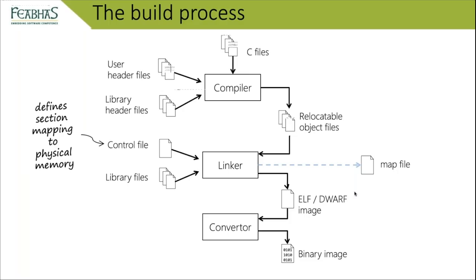The linker control file defines which sections map to which parts of memory — for example, putting .text into flash and .bss and .data into RAM. Critically, I always recommend generating a map file. The map file gives you the absolute address of every function, every constant in .rodata, and all data objects. It can also be configured to generate link errors if you exceed the available memory. It's initially hard to read but is extremely valuable.